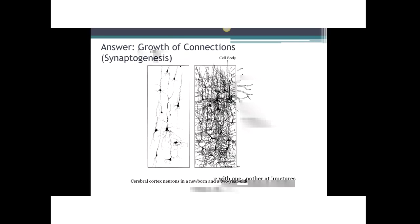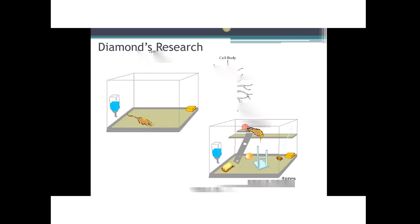The brain overproduces connections at age two and then starts to prune them away. This overproduction and subsequent pruning happens twice in brain development: the first time at age two, and the second time during adolescence. It is important to understand that even though these two periods are remarkable, the brain is continually growing, making, strengthening, and pruning connections throughout our lifetimes. To understand how crucial the environment is, we are going to look at some research by Marion Diamond.